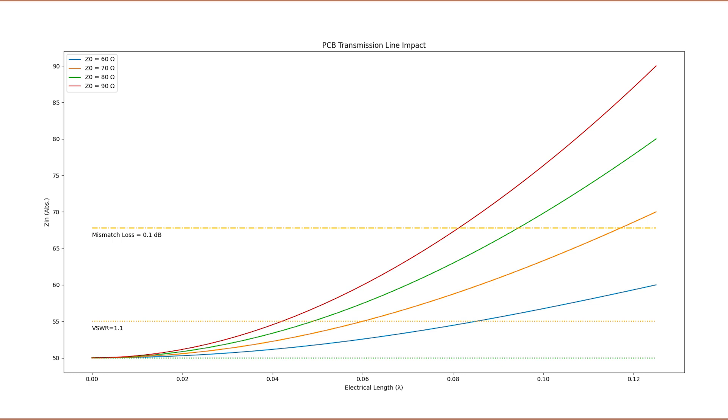So just how much of an impedance mismatch is acceptable and how much is too much? Unfortunately, there is no globally accepted standard. For my own designs, I try to never exceed a mismatch loss of 0.1 dB.